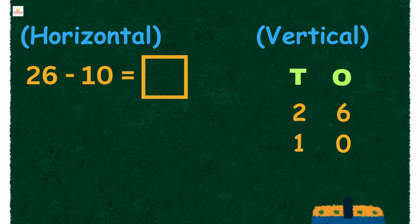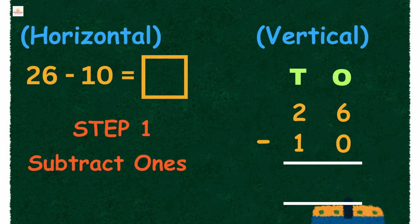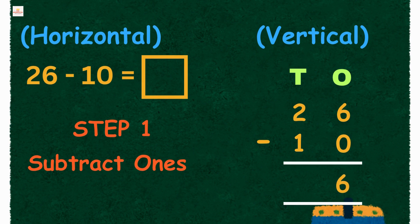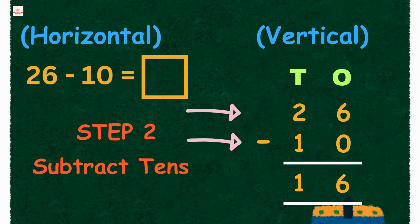Now put the minus sign and the lines. Step 1: Subtract the ones. Six minus zero equals six because zero means nothing. Step 2: Subtract the tens. Two minus one equals one.